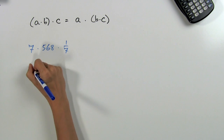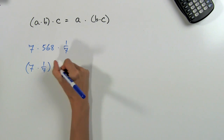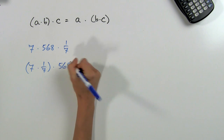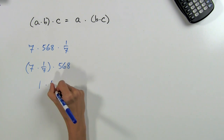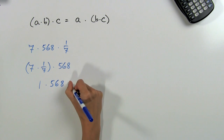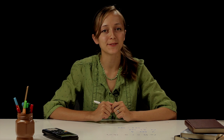But that is a lot of multiplication to do by hand. Instead, it would be easier if we used the associative property of multiplication to rearrange these numbers. We could write 7 × (1/7) × 568. Since 7 × (1/7) = 1, and 1 × 568 = 568, that was a lot easier. And that's how we used the associative property of multiplication to simplify. Thanks for watching!